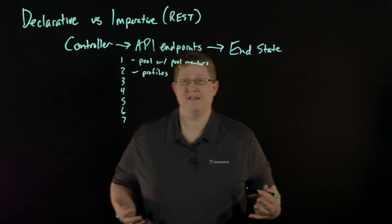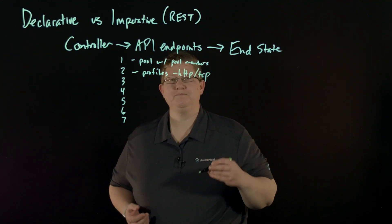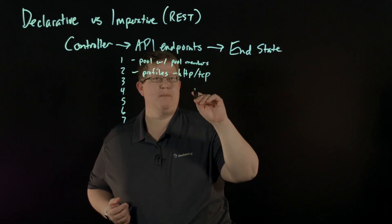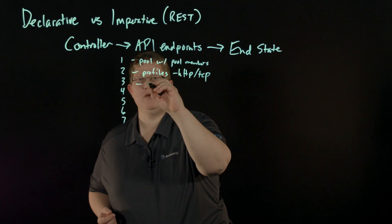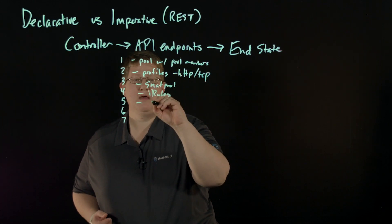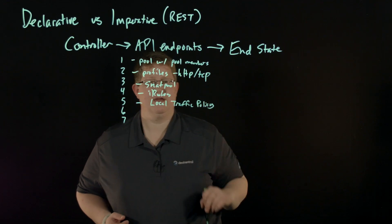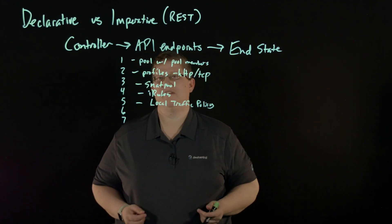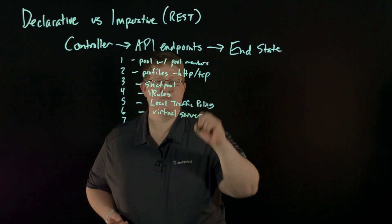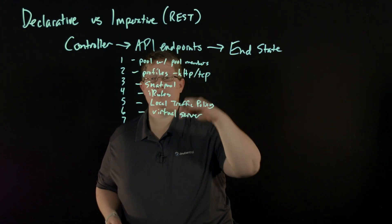If you're only going to use standard profiles, you don't really need to do anything there. But if you're going to customize anything — like the HTTP or TCP profiles — you need to create those custom profiles. Then maybe you have a SNAT pool that you need to define. Then maybe you need some iRules to deploy. Maybe you have a local traffic policy to establish as well. And at some point, you need to establish your virtual server. All of these iterative steps each require one or more API calls.